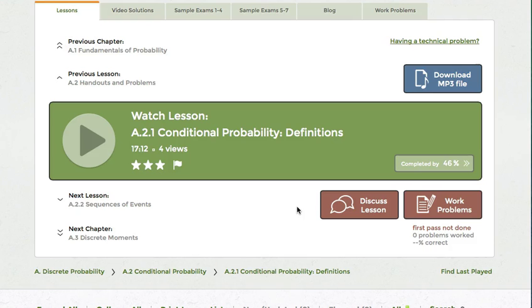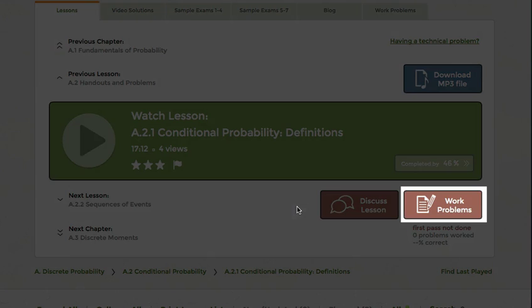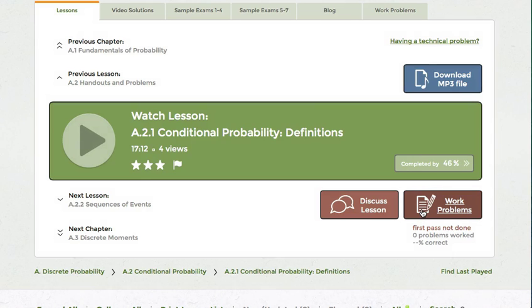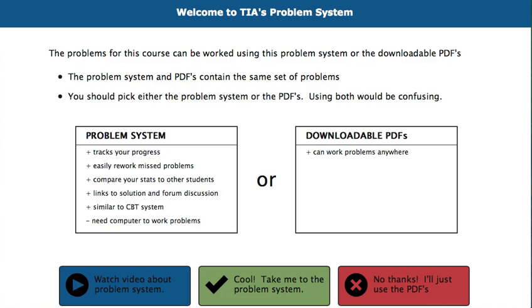Let's have a look at how it works. As you go through the lessons learning the material, there's a Work Problems button on every lesson that has problems associated to it. You'll either want to use the Problem System to work all your problems or just use the PDF files. So the first time that you click on the Work Problems button, you'll be offered that choice, as well as a link to this introduction video.